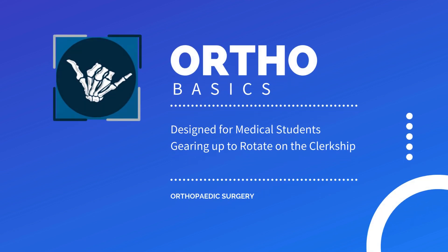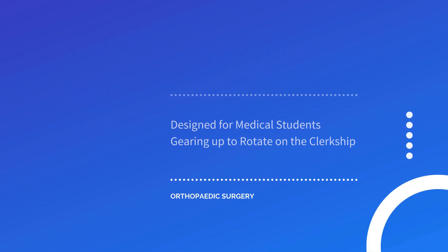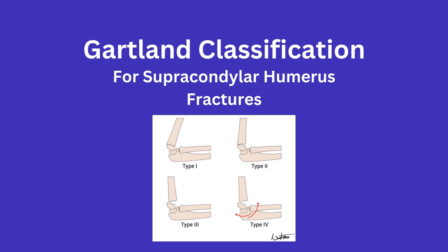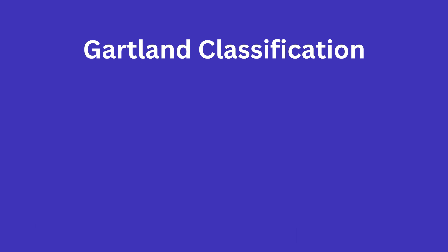Today we will briefly cover the Gartland classification for supracondylar humerus fractures. This classification examines extension type supracondylar humerus fractures, as they are by far the most common type you will see.